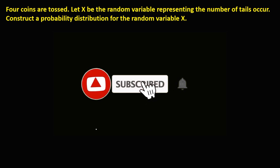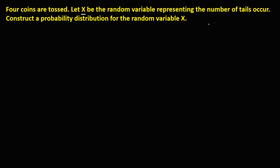So let's have this problem. Four coins are tossed. Let X be the random variable representing the number of tails, and construct the probability distribution for the random variable X. So first, we need to find the total possible outcomes for this experiment, since this is a coin and a coin has two sides and we have these four coins.